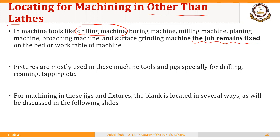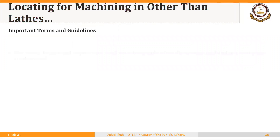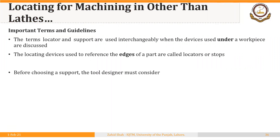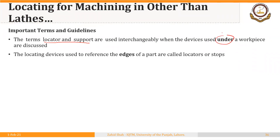For machining in jigs and fixtures, the blank is located in several ways, as will be discussed in the following slides. The terms locator and support are used interchangeably when the device used under a workpiece is discussed. Locating devices used to reference the edges of a workpiece are called stops. So both support and stop are actually locators, just referred to differently depending on their position.